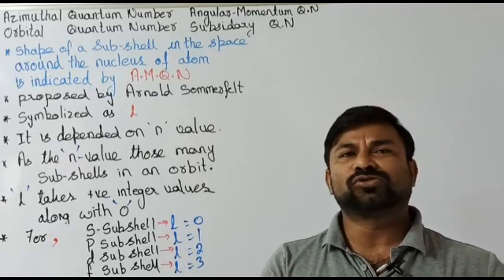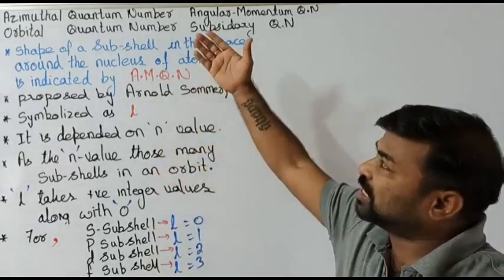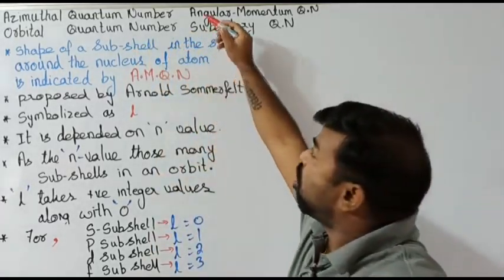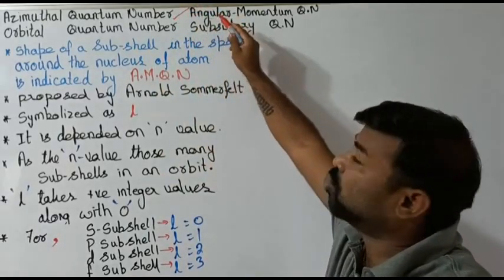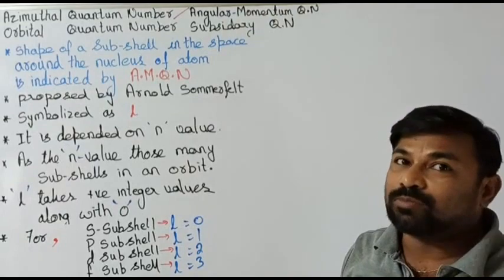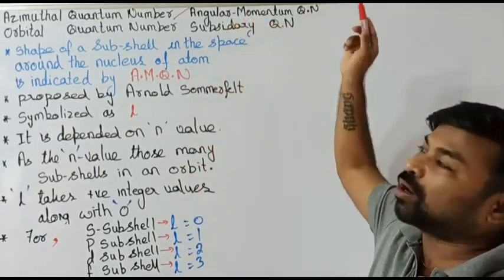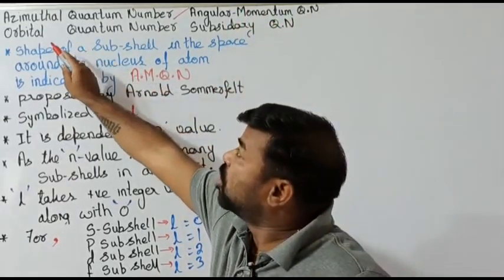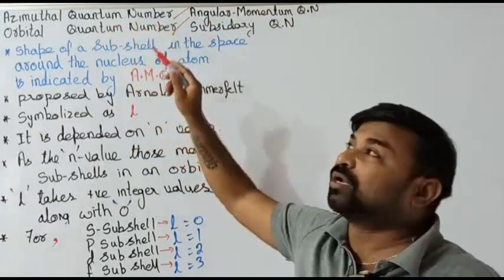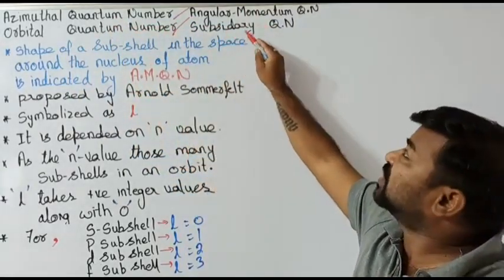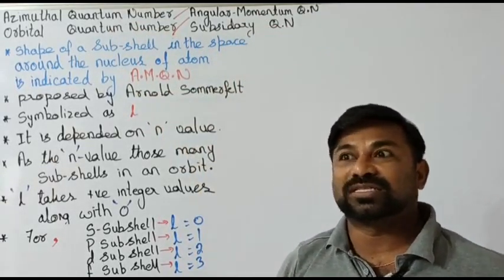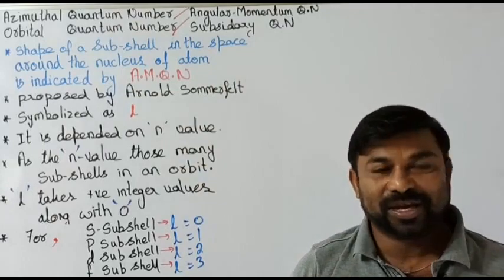There are many names for this quantum number. The first is the azimuthal quantum number. The second name is the angular momentum quantum number. The third name is the orbital quantum number. And the fourth name is the subsidiary quantum number. So this quantum number has four names.